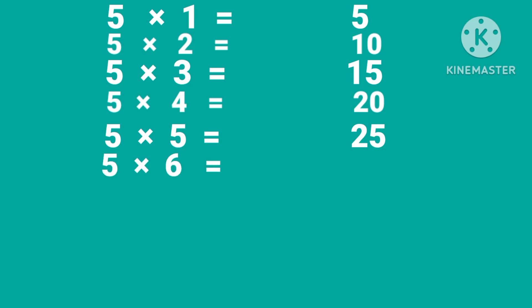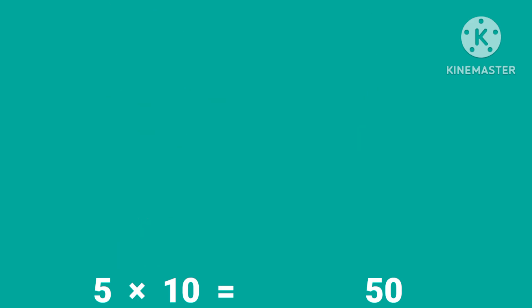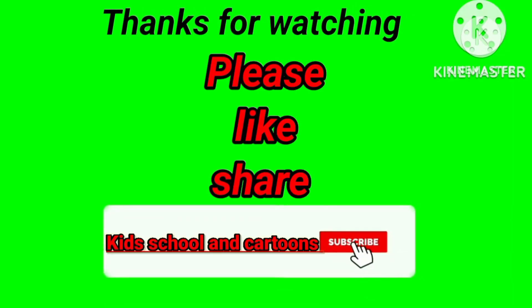5 times 1 is 5, 5 times 2 is 10, 5 times 3 is 15, 5 times 4 is 20, 5 times 5 is 25, 5 times 6 is 30, 5 times 7 is 35, 5 times 8 is 40, 5 times 9 is 45, 5 times 10 is 50.